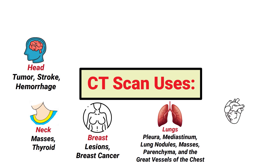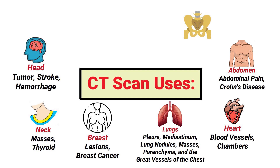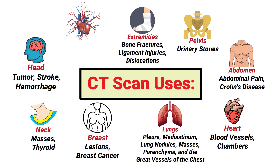CT scans can also be used to get a look at the great vessels of the chest. When performed on the heart, it looks at the blood vessels and chambers, and can be used to detect or diagnose coronary artery disease. When performed on the abdomen, it assesses for abdominal pain and can diagnose diseases such as Crohn's disease. A CT scan in the pelvic region is the gold standard for diagnosing urinary stones.